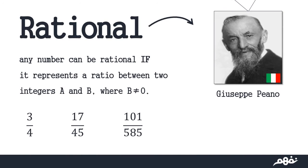Any number can be rational if it represents a ratio, a ratio between two integers A and B, where B is the denominator which doesn't equal zero. Like for example, 3 over 4, 17 over 45, 101 over 585. And this term was first released by the Italian mathematician Giuseppe Peano.